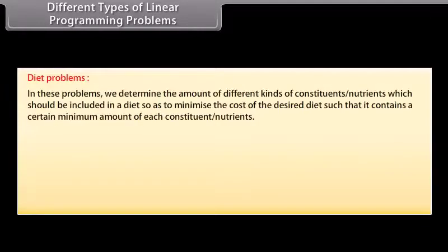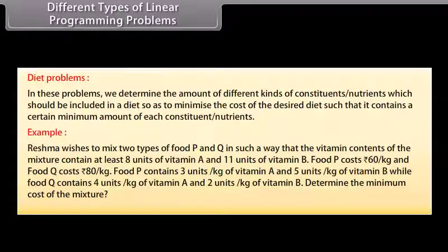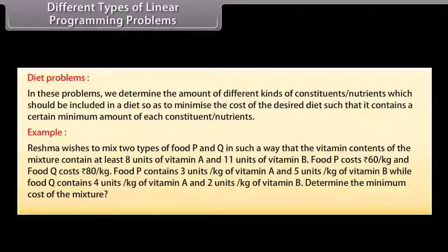Diet problems: In these problems, we determine the amount of different kinds of constituents or nutrients which should be included in a diet so as to minimize the cost of the desired diet, such that it contains a certain minimum amount of each constituent or nutrient. Example: containing vitamin A and 2 units per kg of vitamin B. Determine the minimum cost of the mixture.